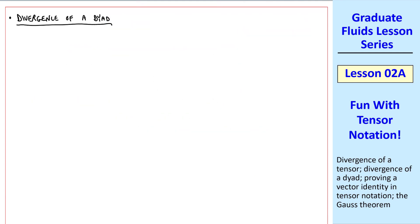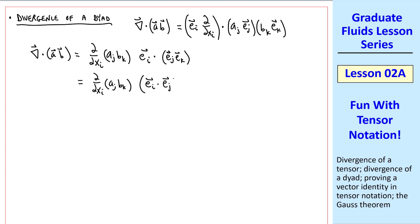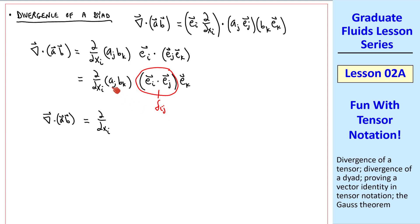For example, consider the divergence of a dyad, del dot ab, where a and b are both vectors. We write the del this way in formal tensor notation, the a this way, and the b this way. But again, these e's are not affected by this derivative, so we can take them outside the derivative. So I collected all the scalar components here, and the vector components here. Again, this dot product applies only on the leftmost vector here, so we rearrange it this way. Again, we recognize delta ij. Now we can contract on the aj and the delta ij, making this an ai. This is our answer in formal tensor notation.